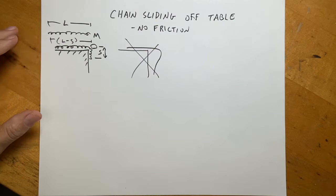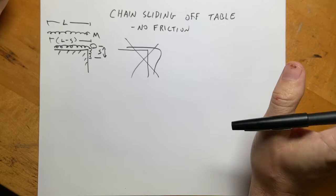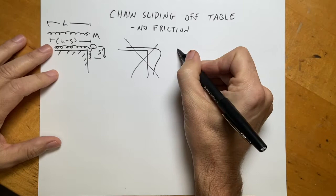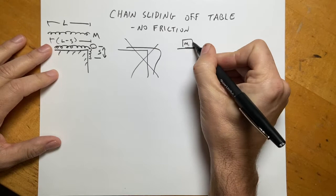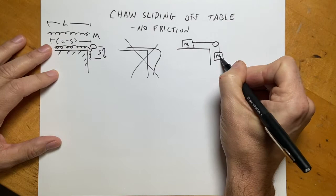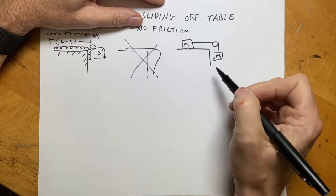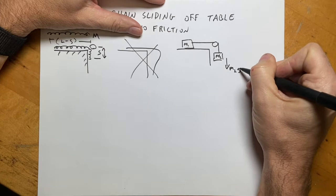I'm going to treat this like a half-Atwood machine. In a half-Atwood machine, you have a block m1 on a surface connected by a pulley to a hanging block m2. The easiest way to solve this is to ask what forces act on the system. The downward gravitational force on m2 is really the only net external force, since the normal force cancels gravity on m1.